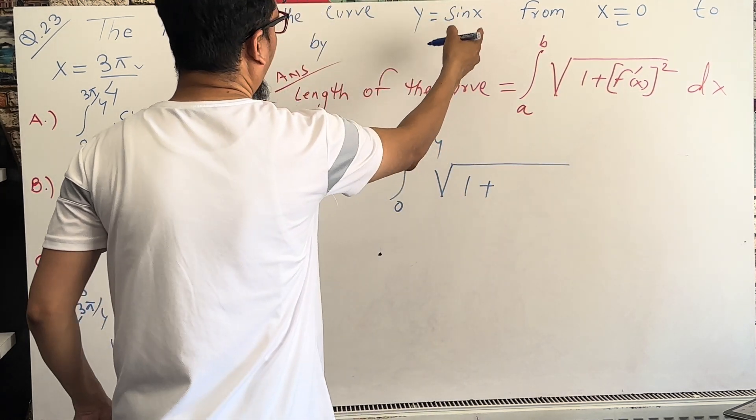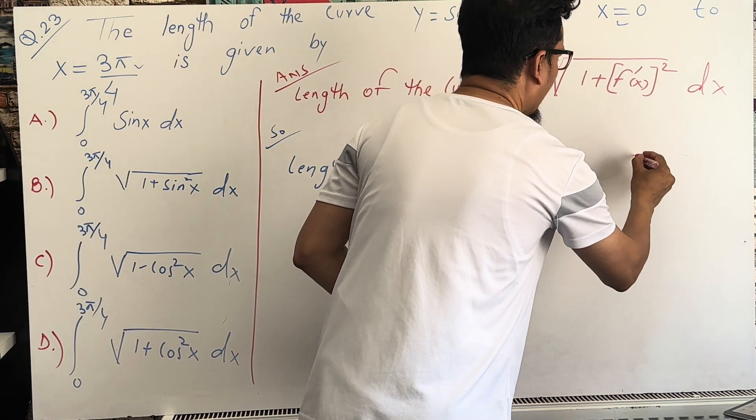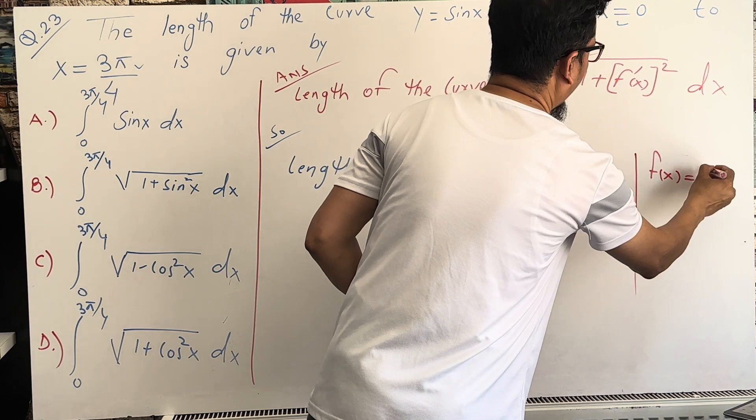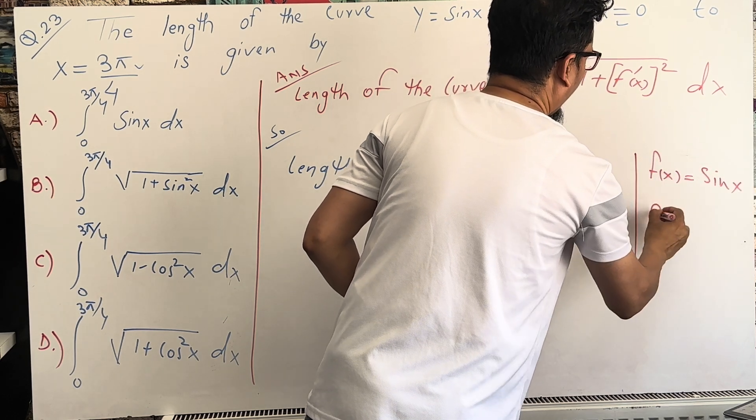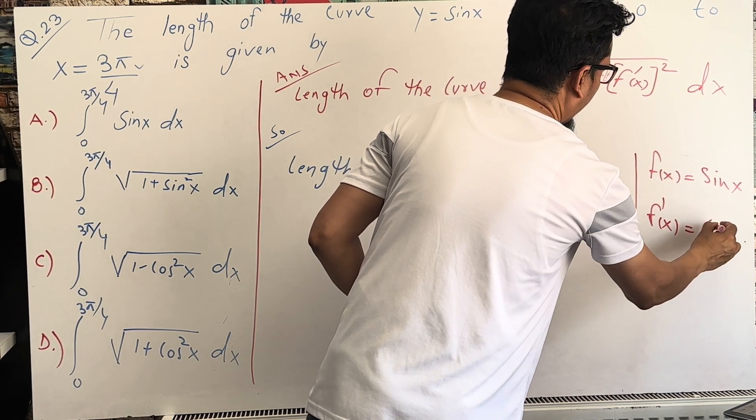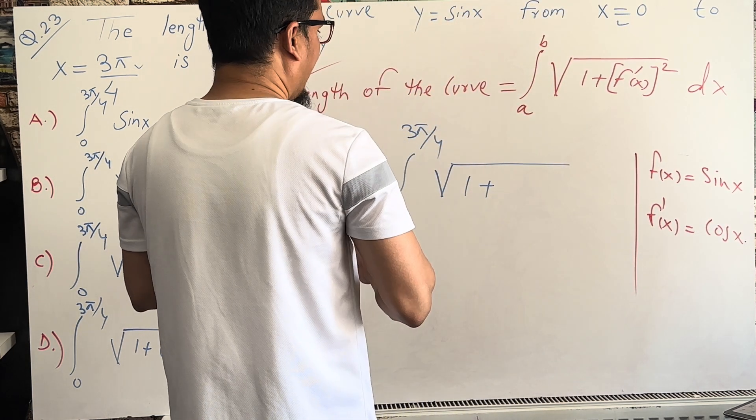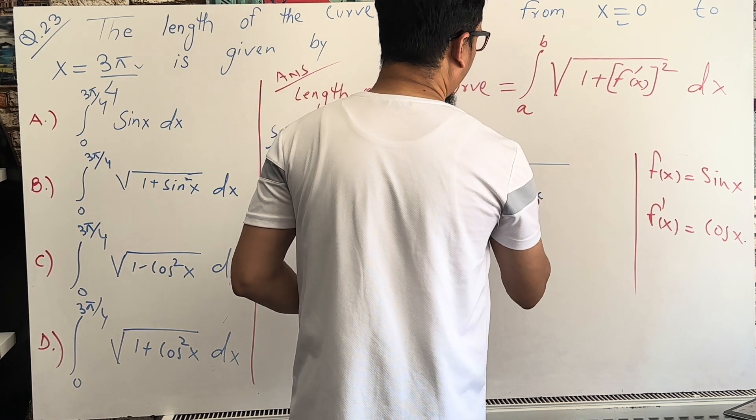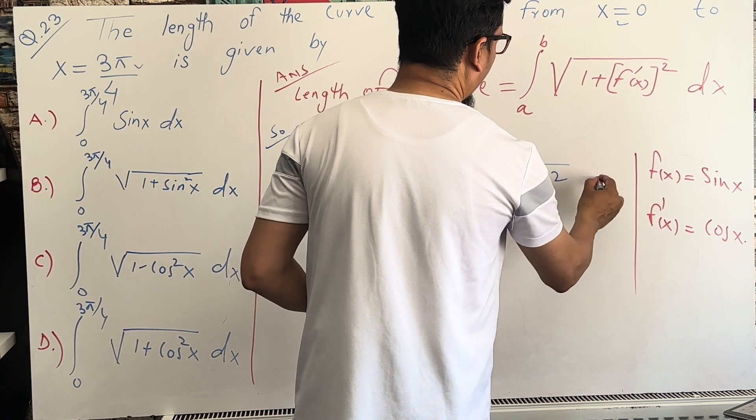So 1 plus f prime of x. You know f of x is equal to sine x, which is given. So f prime of x, you know, is cosine x. So here f prime of x is cos x, whole square, then dx.